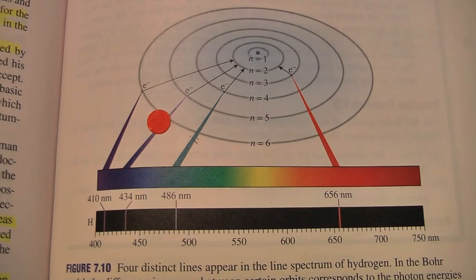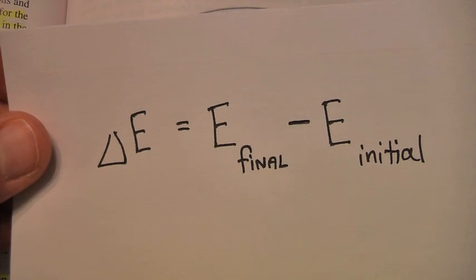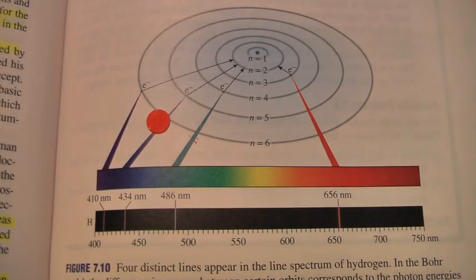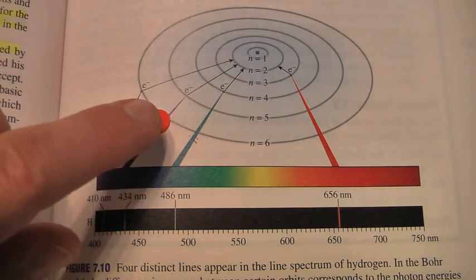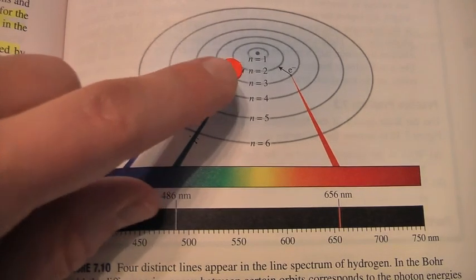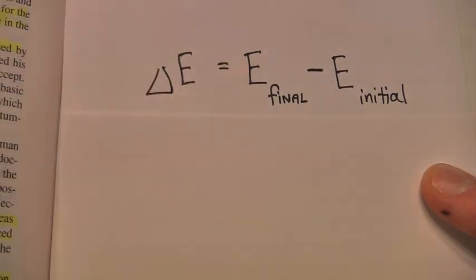That brings us to an equation where we can talk about the change in energy. The change of energy equals the final energy minus the initial energy. If that's the case, what is the change in energy for an electron going from an outer orbit to a closer orbit? The change in energy should be negative for an electron going from an outer orbit to a closer orbit to the nucleus.